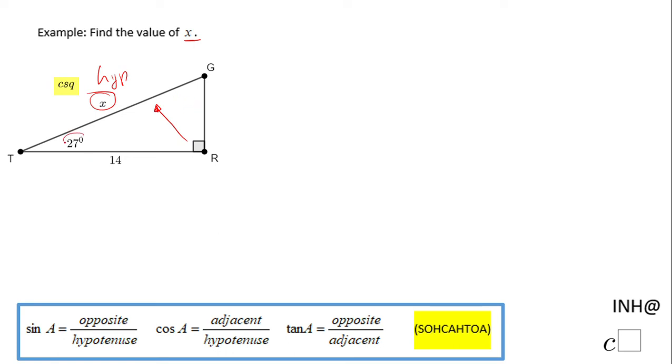This is the hypotenuse. We know this angle 27 degrees and we know this leg which is the adjacent leg to angle T. That tells you that you have to use the cosine.